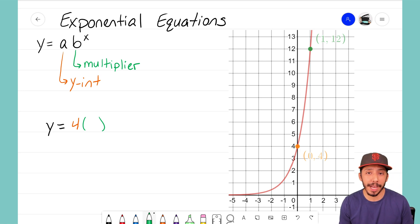We see that we start at 4, and then as I move up, the next term on this exponential graph is at (1, 12). So we've jumped from 4 all the way up to 12, and we need to figure out what our multiplier is.